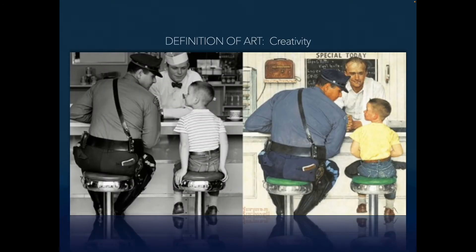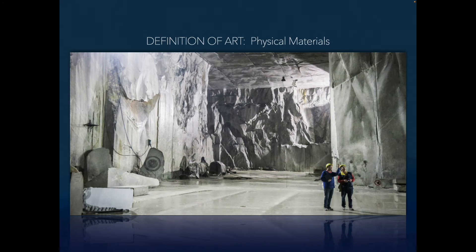Let's go through each part of the definition. 'Creative' - Norman Rockwell took a lot of photos of scenes, then manipulated and added his own touches to them. That's creative. 'Using physical materials' - an artist can't just say something and have it be art; it has to be something tangible. Whether it's paint or stone - we can stretch the definition a little bit for digital art.